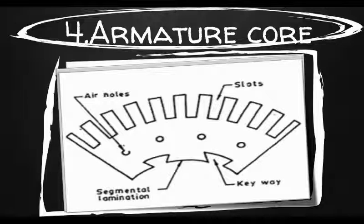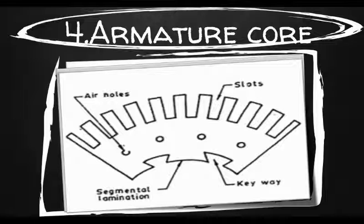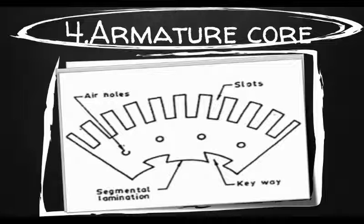Up to diameters of 1 meter, the circular stampings are cut out in one piece. But above this size, these circles of such thin sections are difficult to handle because they tend to distort and become wavy when assembled together. Hence, the circular laminations instead of being cut out in one piece are cut in a number of suitable sections or segments, as you can see in the figure, which form part of a complete ring. The purpose of using laminations is to reduce the loss due to eddy currents — thinner the laminations, greater the resistance offered to the induced EMF, smaller the current and lesser I²R loss in the core.